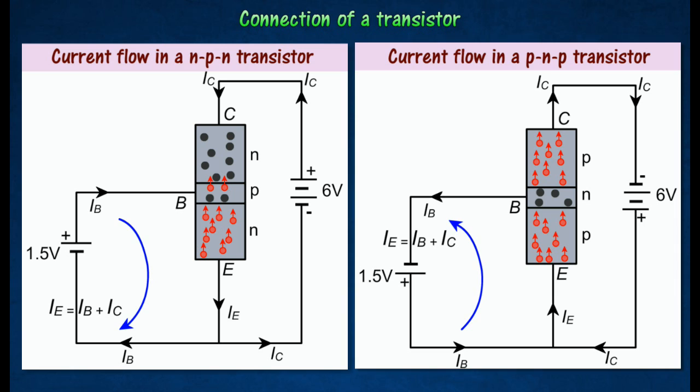To connect a PNP transistor, the positive pole of one battery is joined to E, and its negative pole to C.